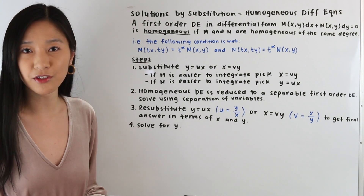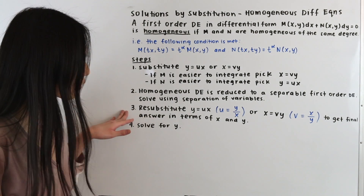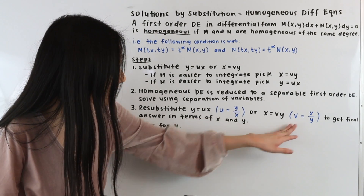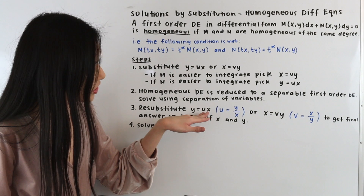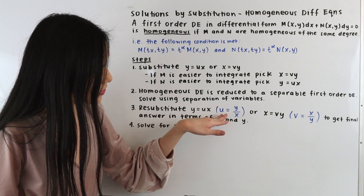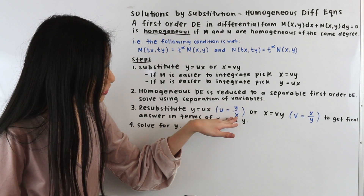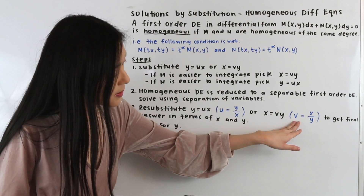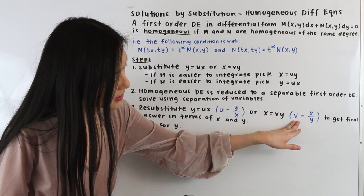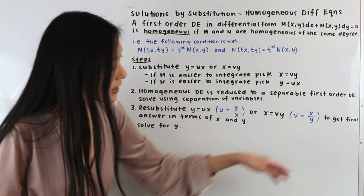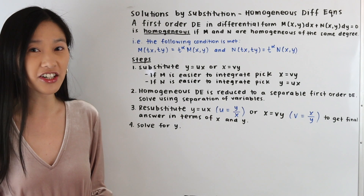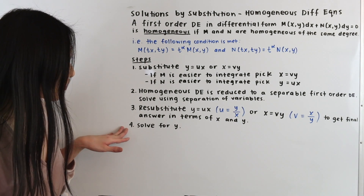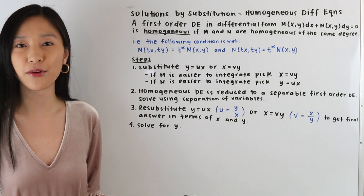After we solve our separable differential equation, the next step is to re-substitute for u or v depending on which substitution we made. If we made the substitution y equals ux, we substitute u equals y over x. If we made the substitution x equals vy, we substitute v equals x over y. This gets our answer in terms of x and y. For our last step, we solve for y, and that is our final answer.